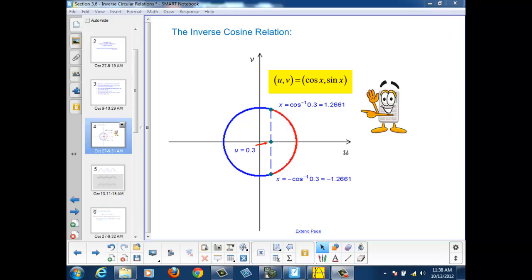the u value would be equal to the cosine of the angle we travel through to reach that uv point on our unit circle. And the v value would be equal to the sine of the angle we've traveled through to reach that point on the unit circle.